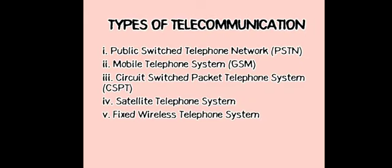The third type is the circuit-switched packet telephone system. A circuit-switching network establishes a channel between a sender and a receiver before they can communicate, as if the sender and receiver were physically connected with an electric circuit. If communication is taking place in a dedicated channel, that channel remains unavailable to other users.